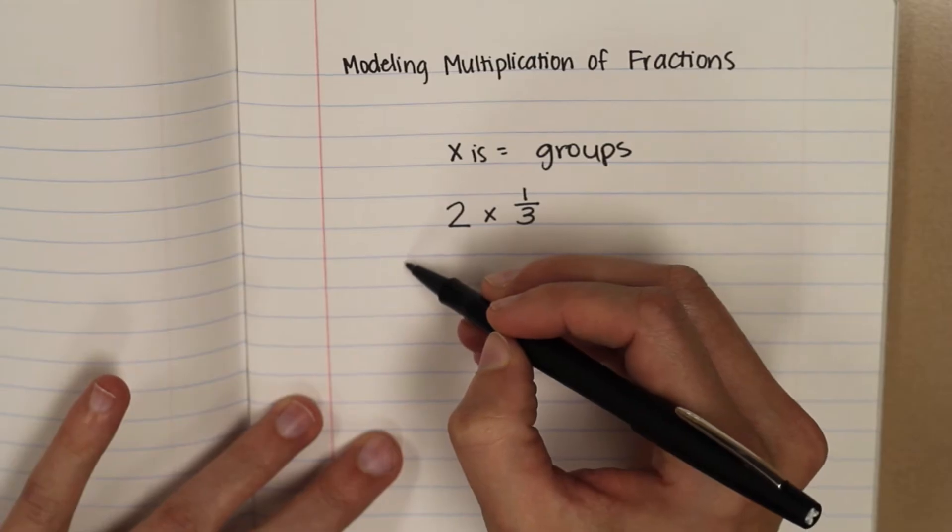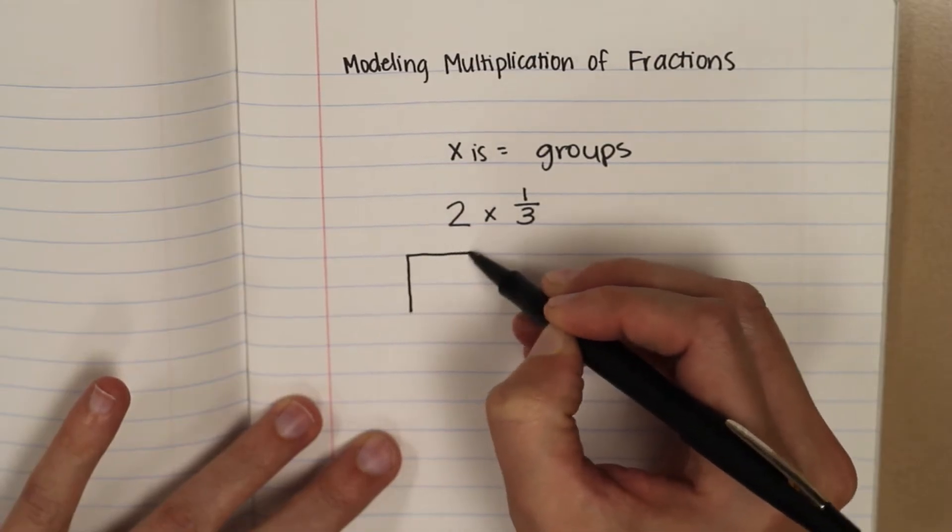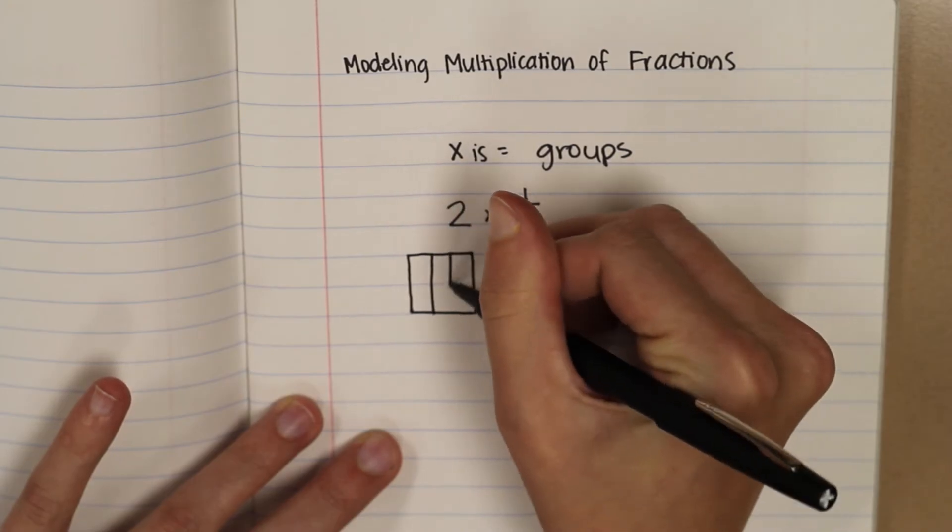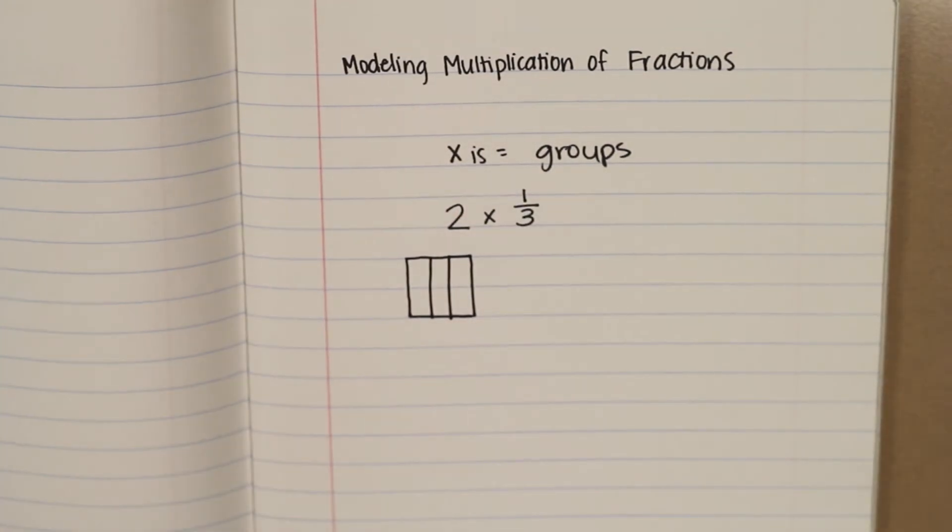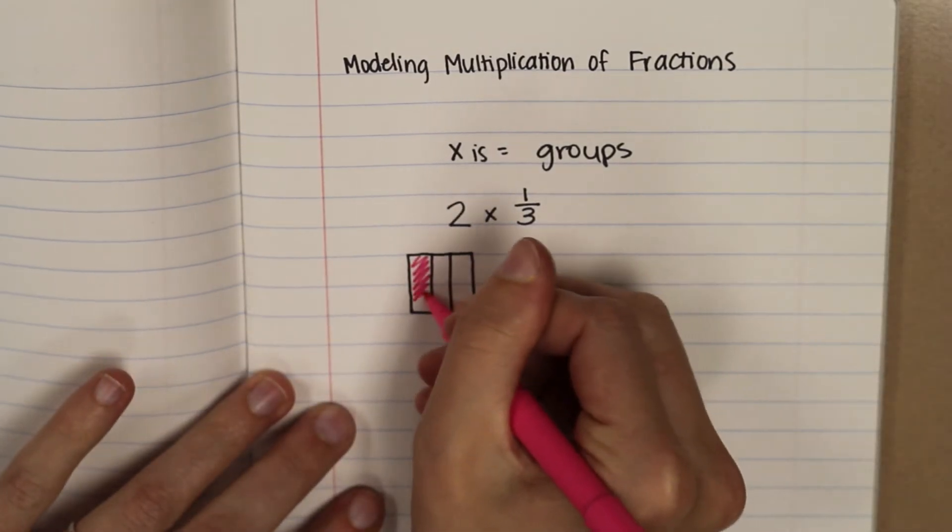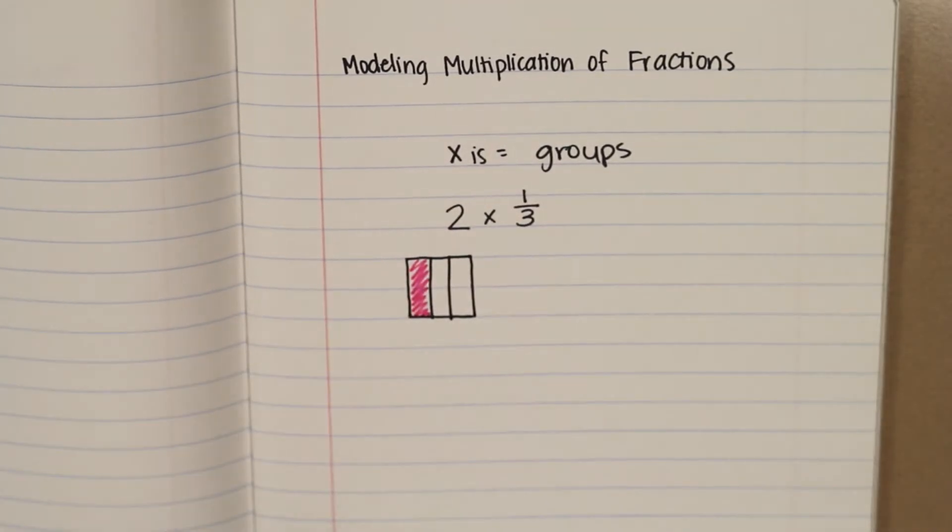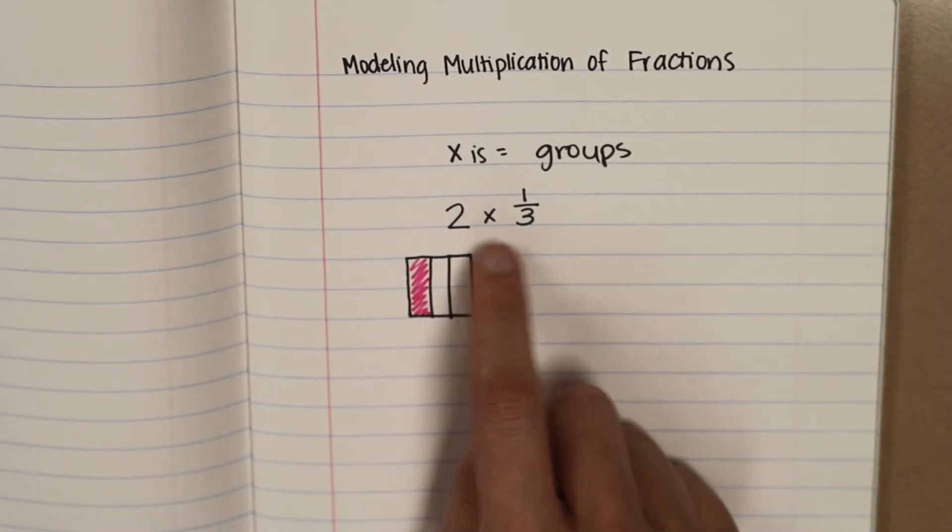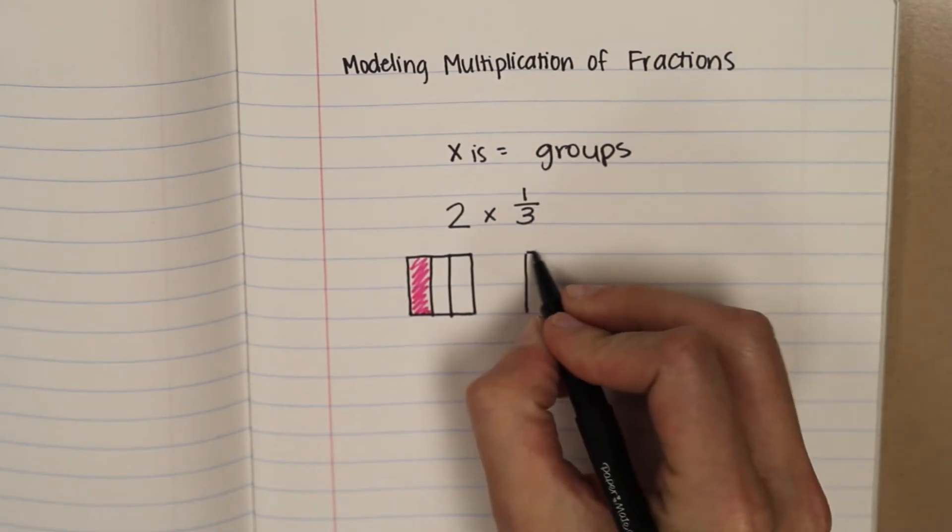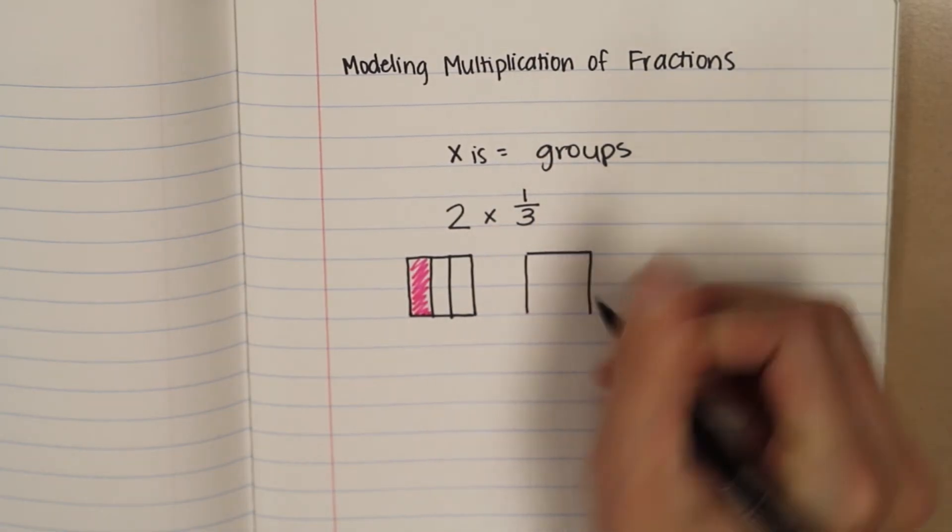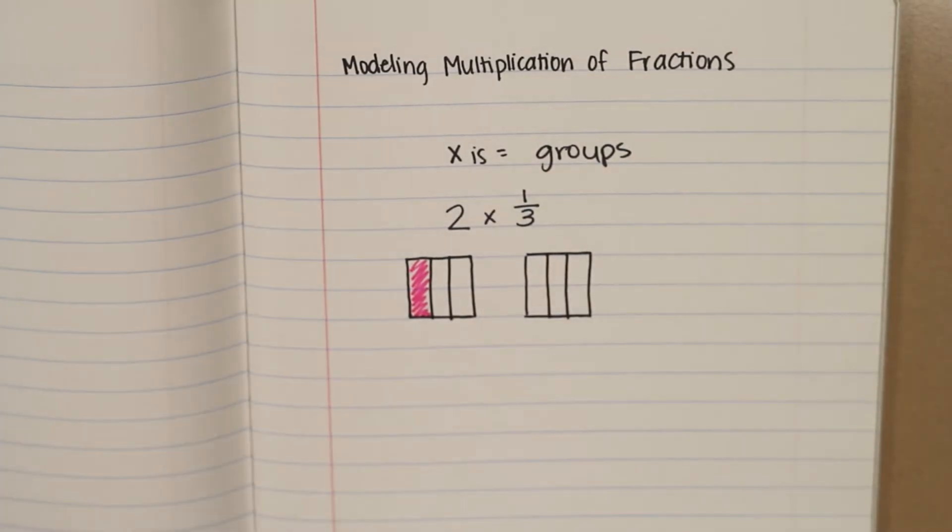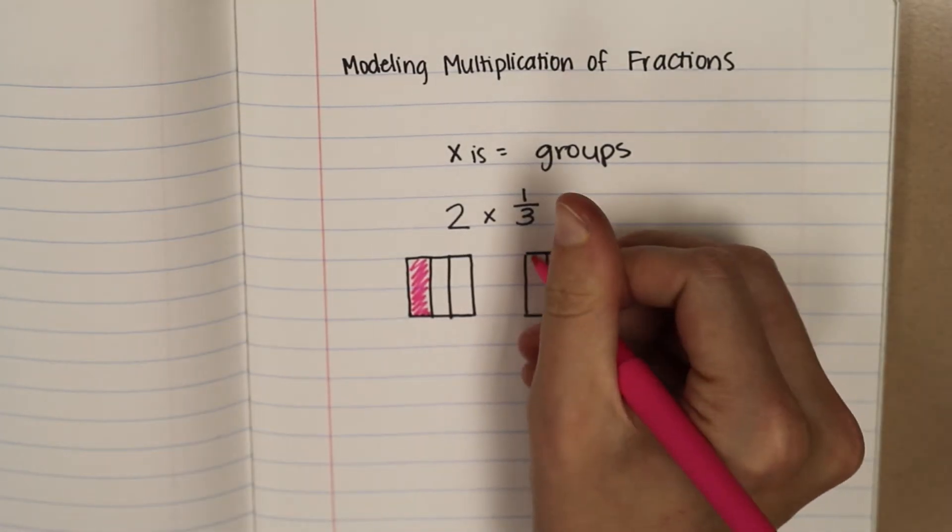So we're going to draw a picture. I'm going to make myself a little square and split it into thirds. We're going to shade in one-third. This picture represents one-third. My multiplication problem tells me that I need two groups of one-third. So I'll draw another picture, another one-third. Split this square into thirds as well.